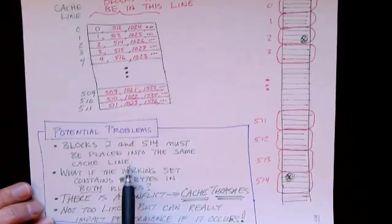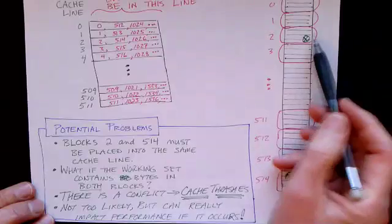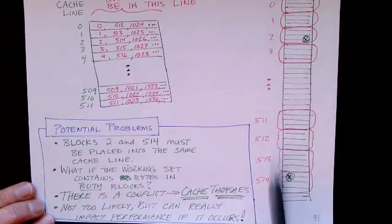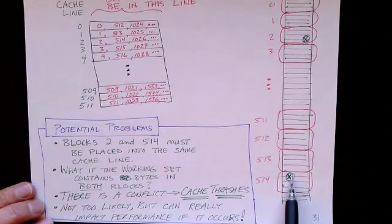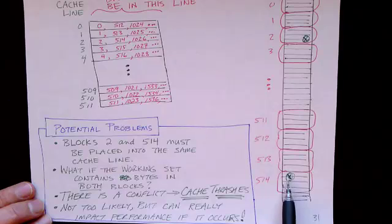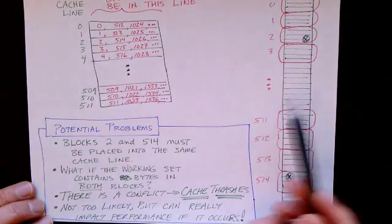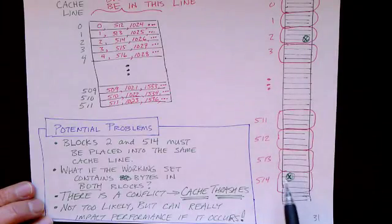Now here's the problem. What if our working set happens to contain bytes in both blocks? Let's say it contains a byte here, down at the bottom of block 2, and maybe the working set also contains some bytes at the beginning of block 514. It's not too likely, but it's possible that when we're executing a particular section of the program, we need information from block 2, and we need information from block 514. This is a conflict.